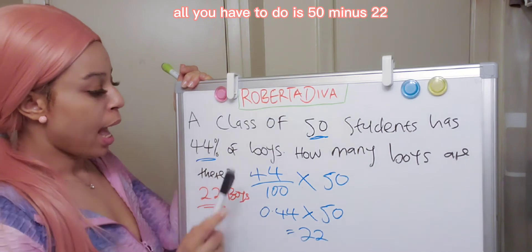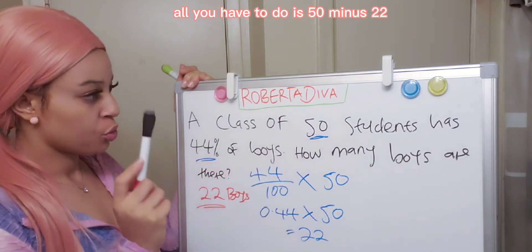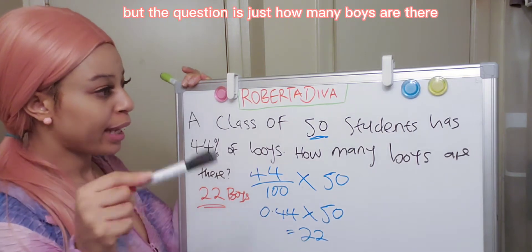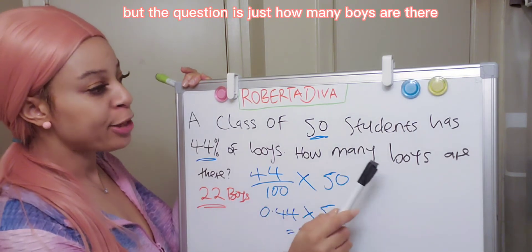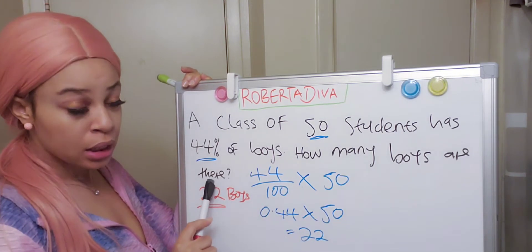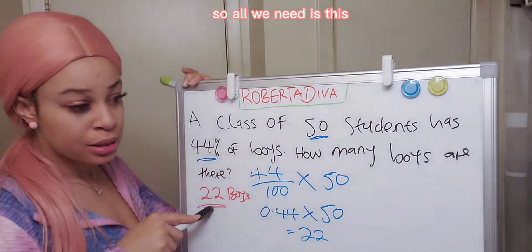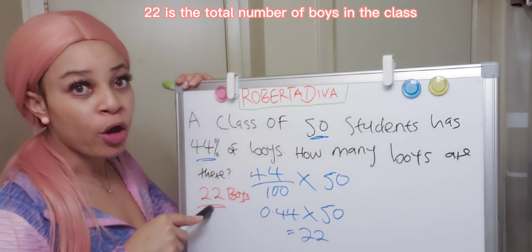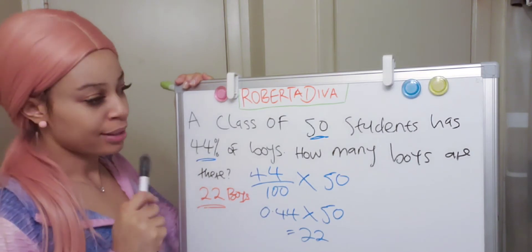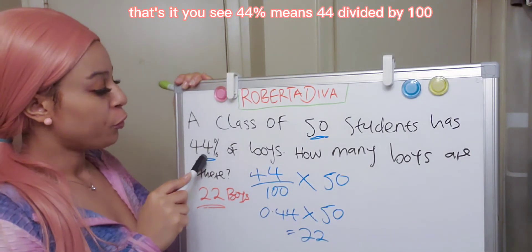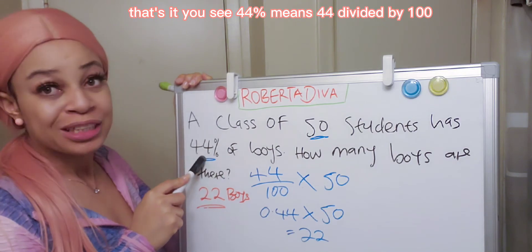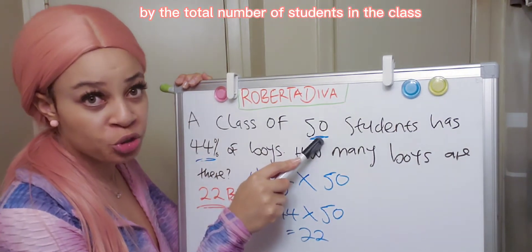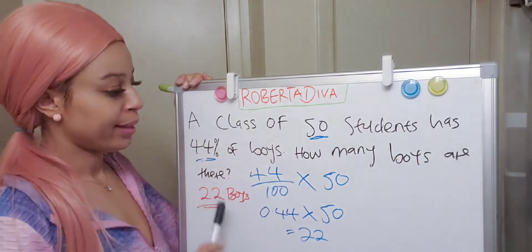All you have to do is 50 minus 22 to give you the total number of girls. But the question is just how many boys are there, so all we need is 22. That's the total number of boys in the class. 44 percent means 44 divided by 100, multiplied by the total number of students — that's the total number of boys. That's it.